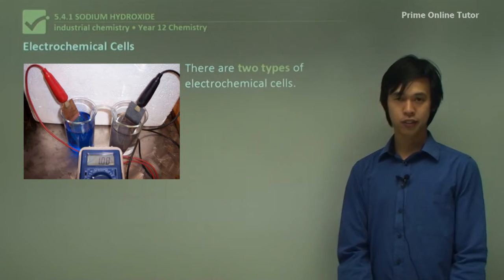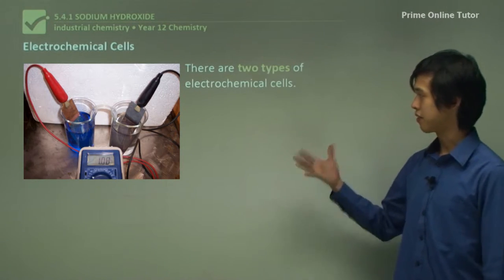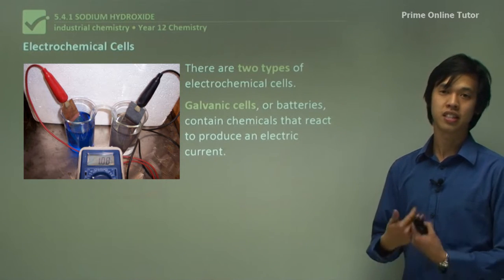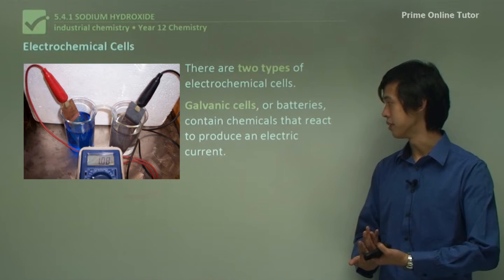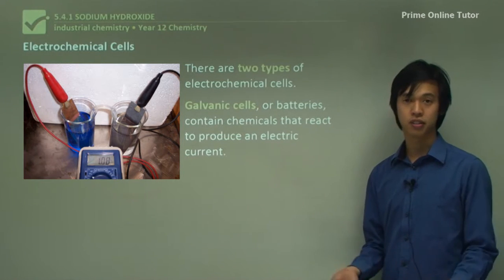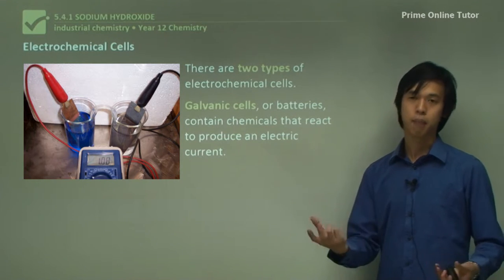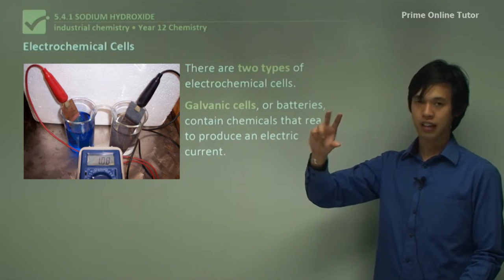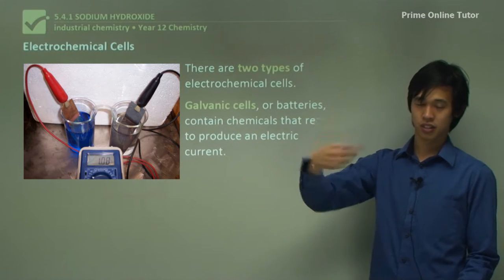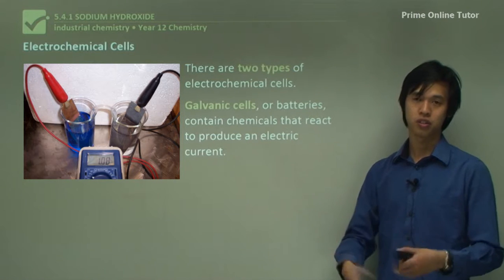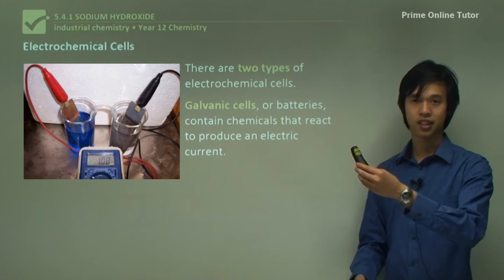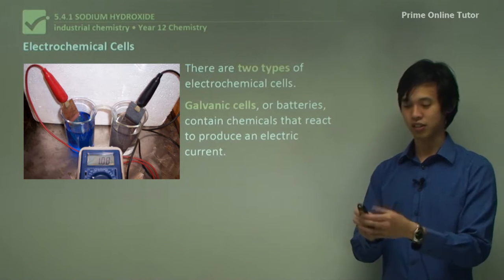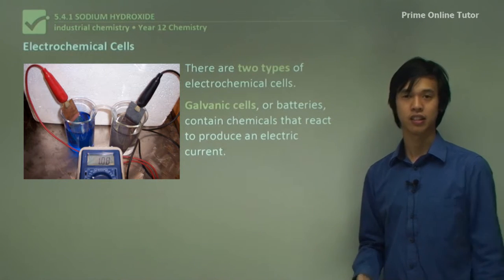There are two types of electrochemical cells. The galvanic cell — galvanic cells, or batteries, contain chemicals that react to produce electrical current. Like a battery, the chemicals are reacting and producing electricity. For instance, this little device here has a battery in it; the chemicals are reacting and producing electricity so I can manipulate my slideshow.